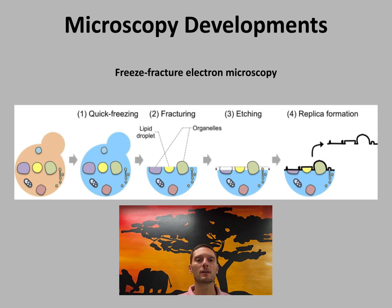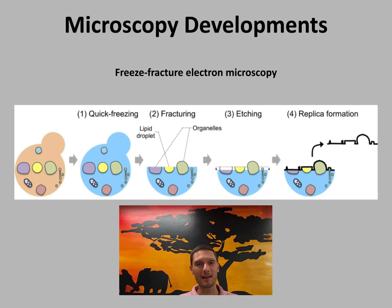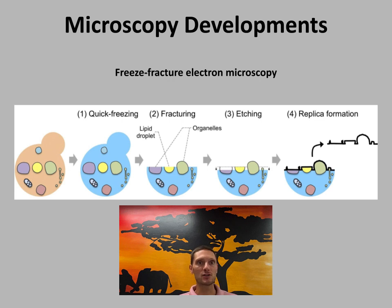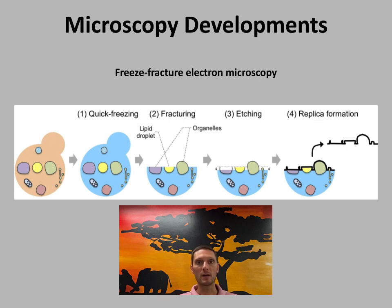Another development is called freeze fracture electron microscopy, which essentially makes a mold of the cell. The cell is frozen and a steel blade fractures the frozen sample — typically at the weakest point, which is usually in the middle of the cell. The ice is removed by vaporization (etching), and then platinum or carbon vapor is fired at an angle onto the fractured surface, creating a coating. Once that coating is removed, it creates a replica of the fractured surface that can be examined under a microscope, allowing a really good 3D image of the cell to be produced.